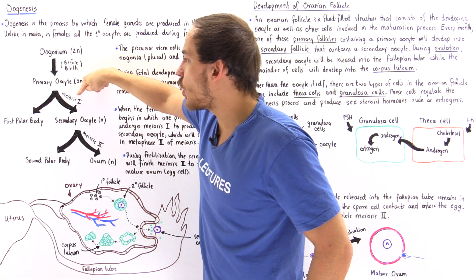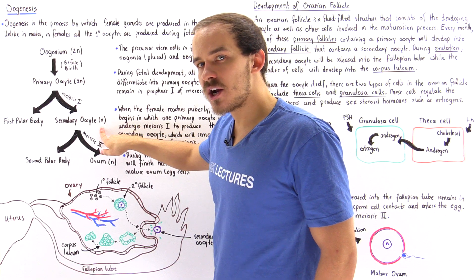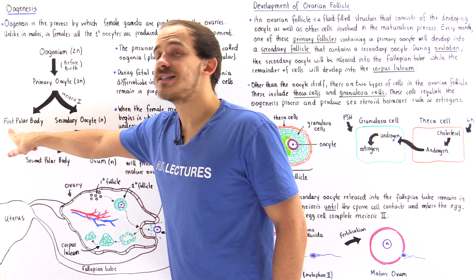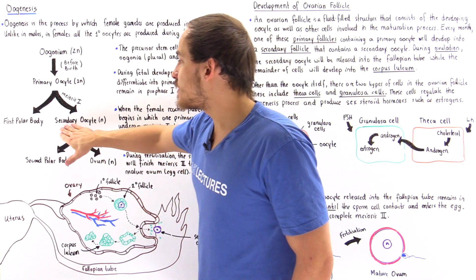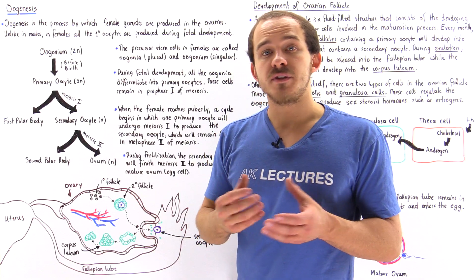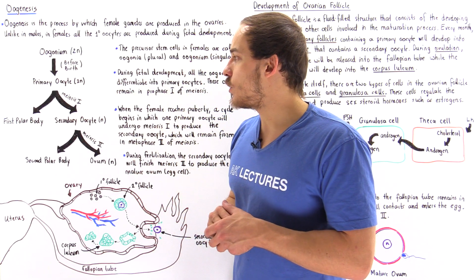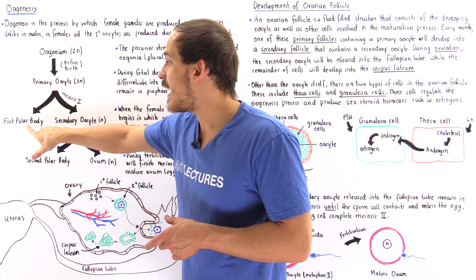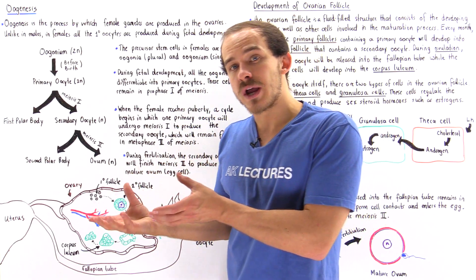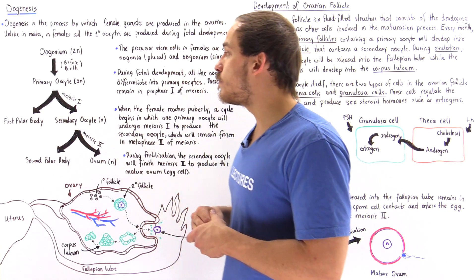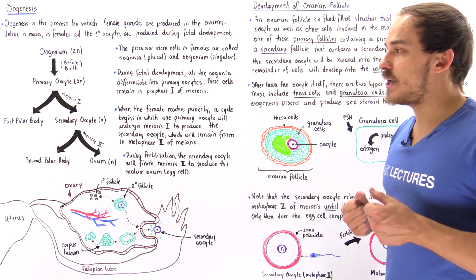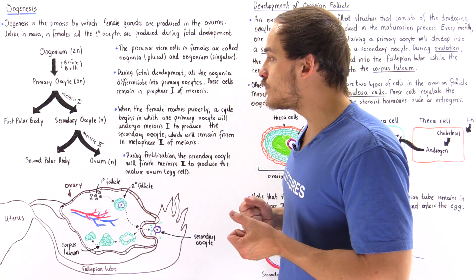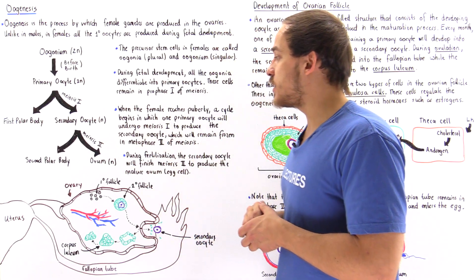The primary oocyte undergoes meiosis 1 to produce the secondary oocyte as well as another cell known as a polar body — this is the first polar body formed. The secondary oocyte contains the majority of the cytoplasm from the primary oocyte, while the polar body obtains only a very small amount. The polar body will essentially degenerate and its contents will be recycled; it's the secondary oocyte that develops into the egg cell.